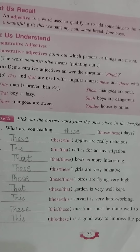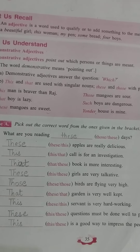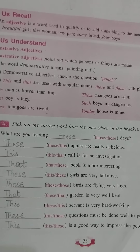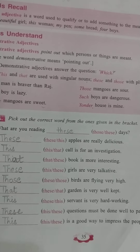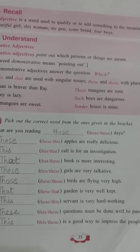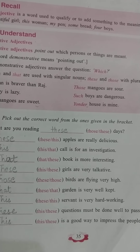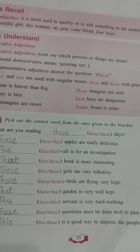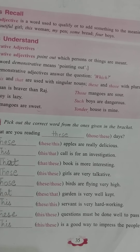Third sentence: 'Dash call is for an investigation.' Here call is singular, so 'this' will be used. Number four: 'That book is more interesting.' 'These girls are very talkative.' 'Those birds fly very high.' As you can see, where there is more than one — means where there are plural nouns — 'these' or 'those' are used. Number seven: 'That garden is very well kept.' 'This servant is very hard working.' 'These questions must be done well to pass the exam.' 'This is a good way to impress the people.'